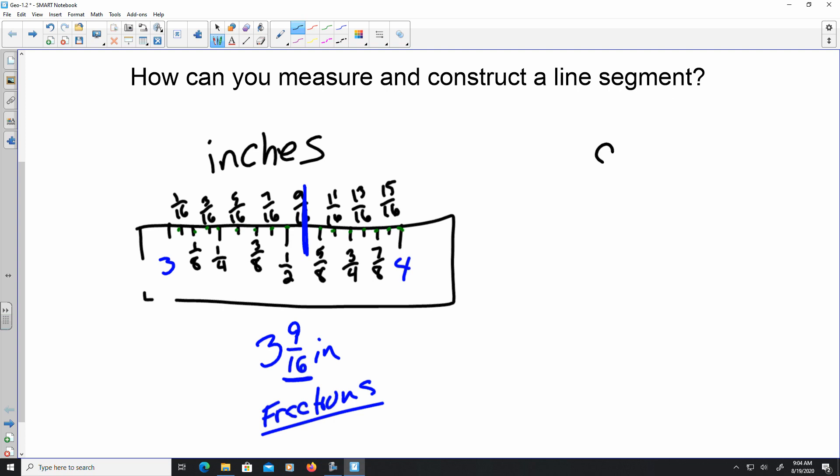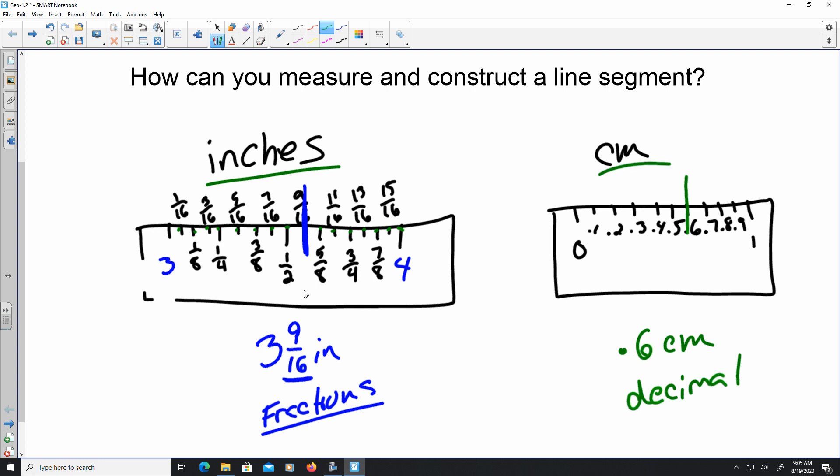When it comes to centimeters, this one is with a decimal. Between zero and one, there are just ten spaces. So we got one, two, three, four, five, six, seven, eight, nine, and then ten. So this is point one, point two, point three, point four, point five, point six, point seven, point eight, and point nine. So if it landed right here, this would be point six centimeters. So this one would be represented as a decimal, and it's going to be just a decimal to the tenth spot. So please keep that in mind when you are asked to measure those things. And be careful, be mindful if they ask you in inches or if they're going to ask you in centimeters.